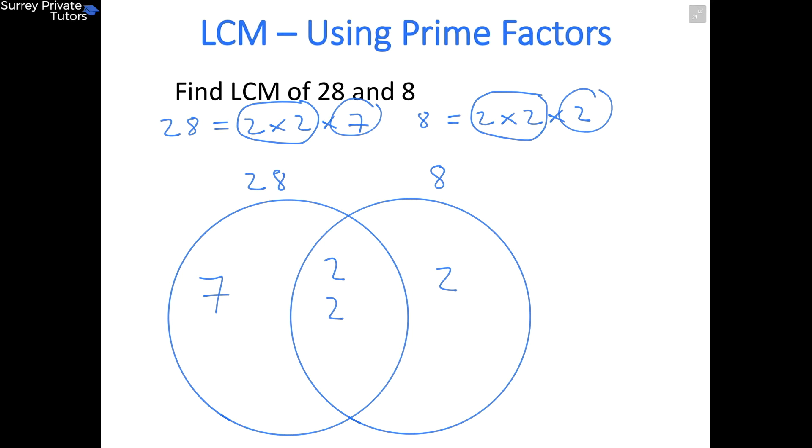To find the lowest common multiple, you look at your diagram and you multiply together all of the numbers that are in each of the three sections. So we've got a 7, a 2, another 2, and another 2. To find our lowest common multiple you do 7 × 2 × 2 × 2, and that will give us our lowest common multiple, which is 56.